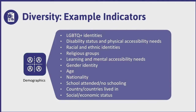Demographic categories include racial and ethnic groups, identities, religious groups, learning and mental accessibility needs, gender identity, age, nationality, school attended or no schooling, countries lived in, and socioeconomic status. These are just a few examples, but there are definitely others that can be considered.